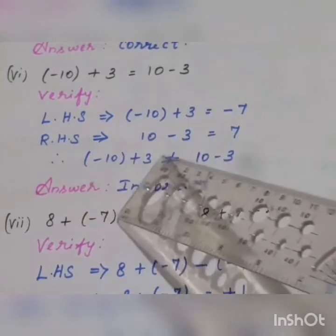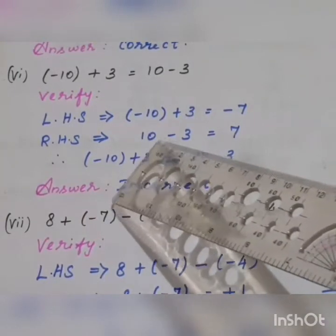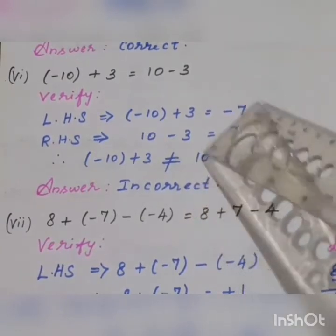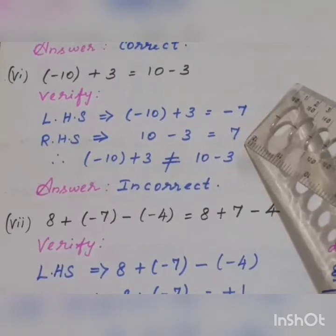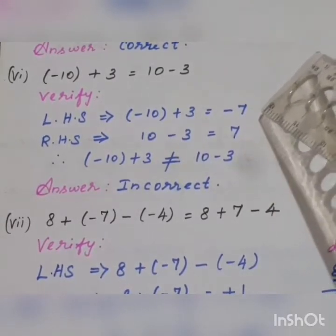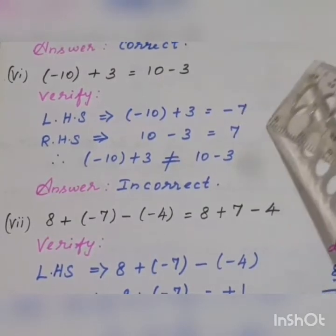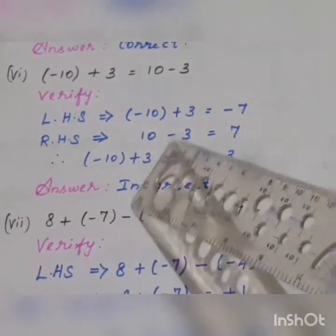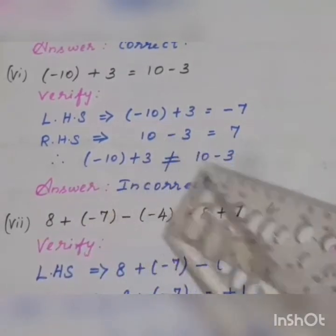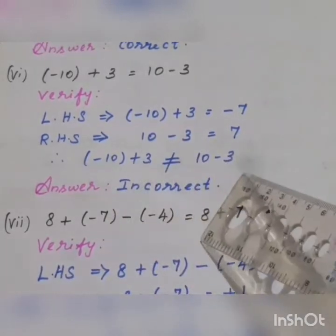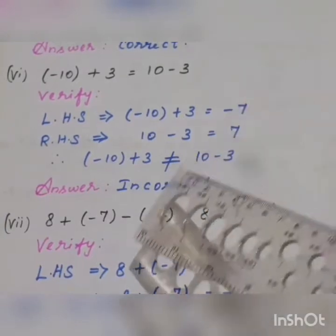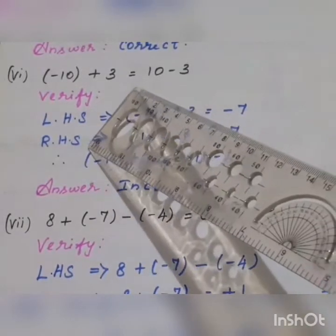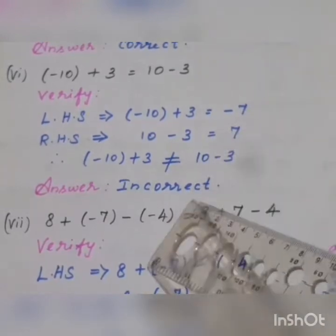Now move to the right hand side: 10 minus 3. We can subtract it easily. Answer is 7, which is positive 7, plus 7. Is it equal? Minus 7 and plus 7 — the numbers are the same but the sign is different, so they are not equal. Left hand side and right hand side answers are not equal. That means minus 10 plus 3 is not equal to 10 minus 3. So the statement is incorrect.